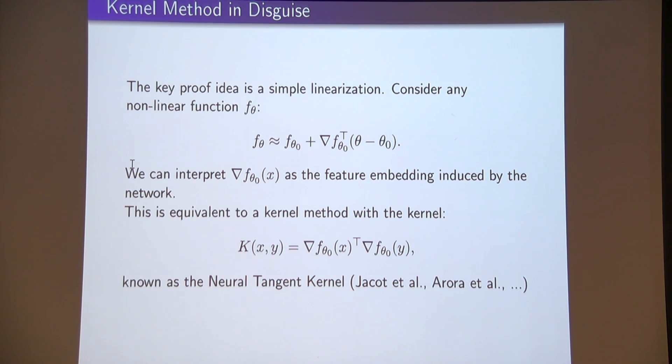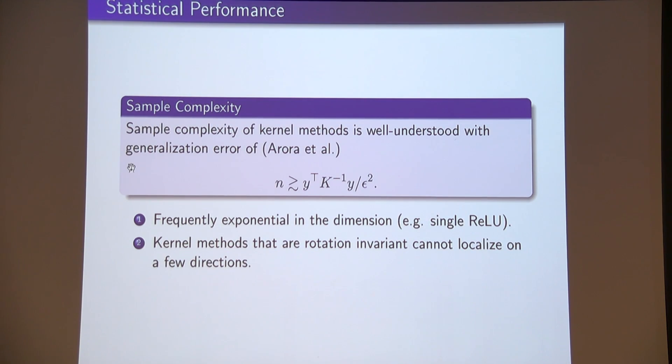It's known as a neural tangent kernel in the literature. So on one hand, this is very good, because if you're a theorist, this makes your life quite easy. Kernel methods have sample complexity that are quite well understood. For example, this bound here says, if you have a kernel, a label vector Y, then the sample complexity is Y transpose K inverse Y. Unfortunately, this bound can be quite bad. If Y comes from a single ReLU, this can be exponential in the dimension. Essentially, the issue is that these kernels are rotationally invariant, so they cannot localize in a few directions. If my Y comes from a model that's a single ReLU, there's only one direction that ever matters. Kernel methods are L2 methods. They're going to pay attention to every direction. You end up paying a huge sample complexity for something that you should have linear sample complexity.